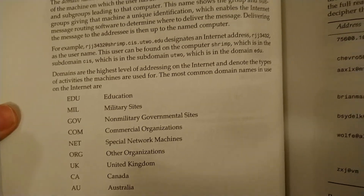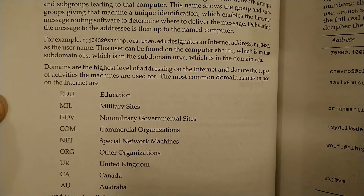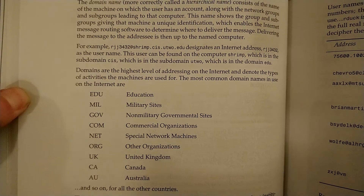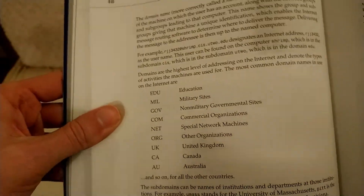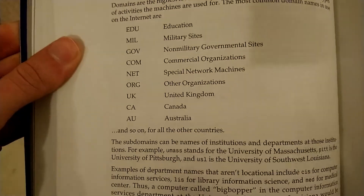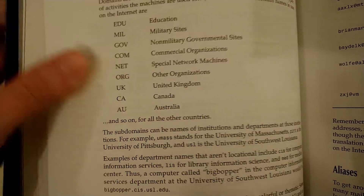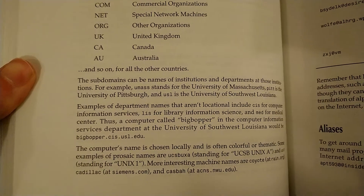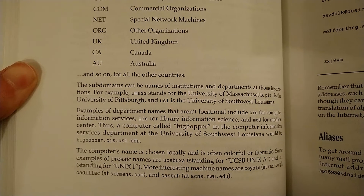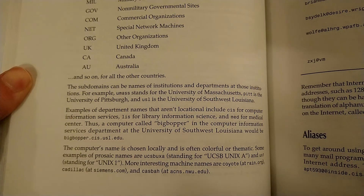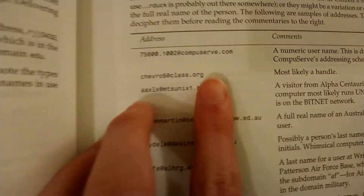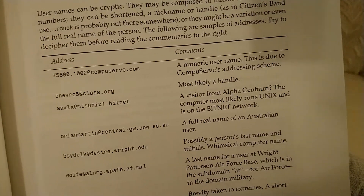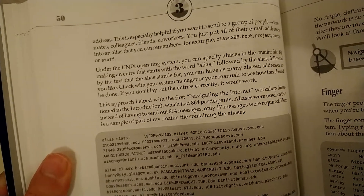Domains are the highest level of addressing on the internet. The most common in use are .edu and .mil. I don't think I've ever seen a .mil address. .ca, .au — wait, .uk? This doesn't explain the .co.uk; it was just .uk. There's a computer called BigBopper at the University of Louisiana whose address is bigbopper.cas. There's someone that has a .bitnet domain. Long text domains have become a big thing very recently.